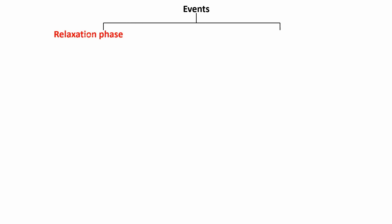The first is the relaxation phase, also called diastole. It is called atrial contraction and ventricular contraction during systole. Systole and diastole are the phases of the cardiac cycle.